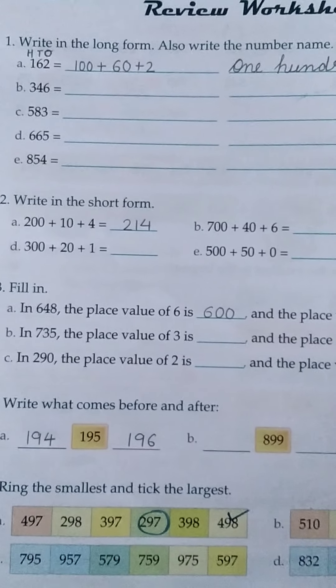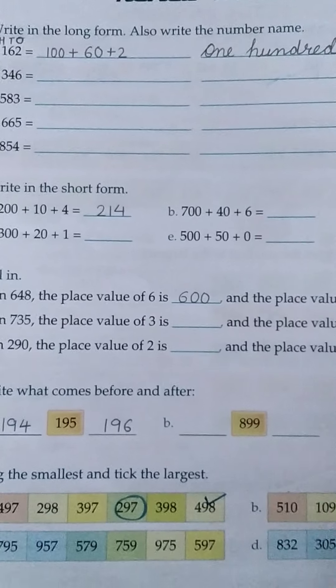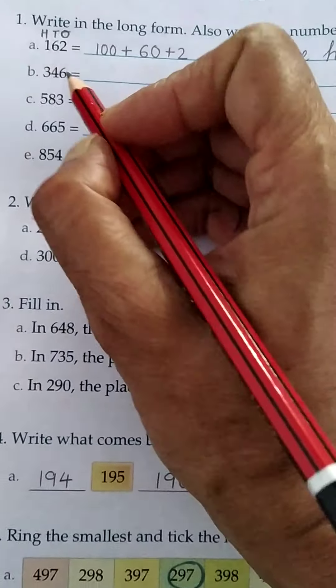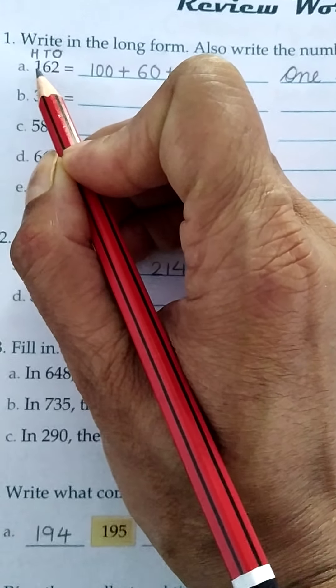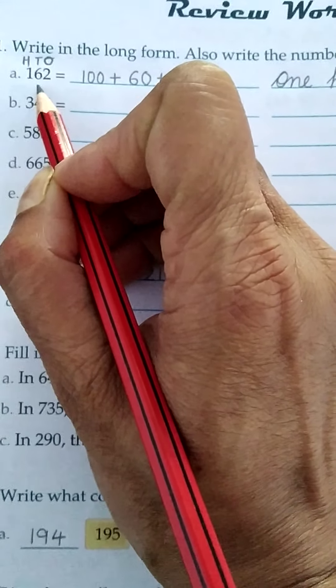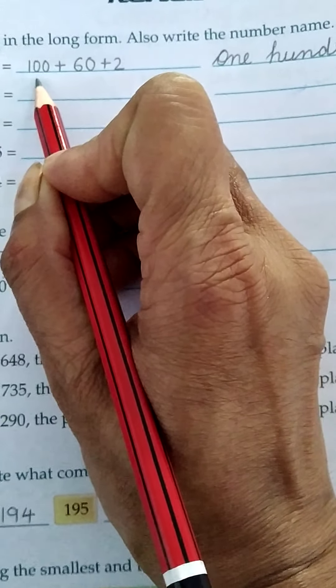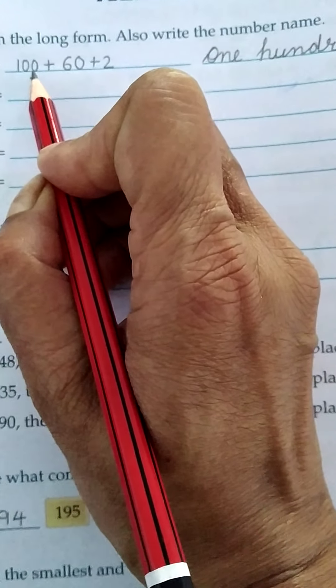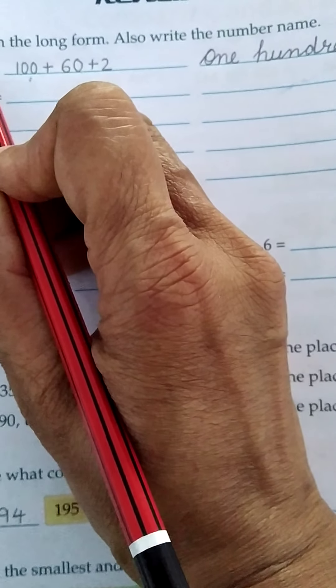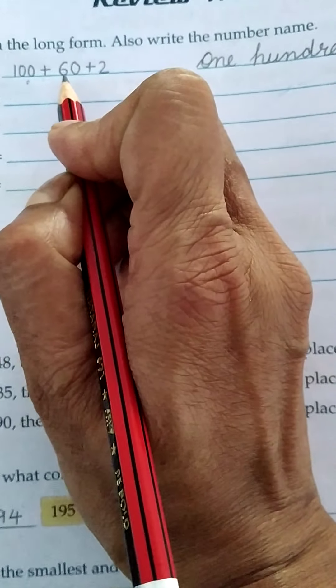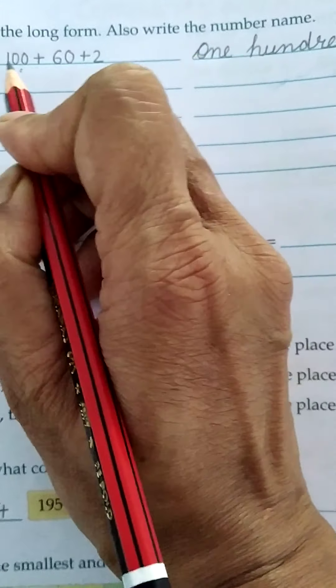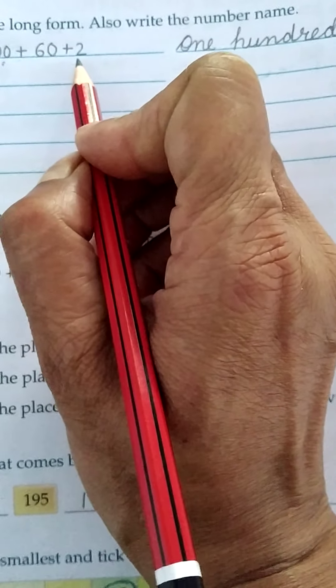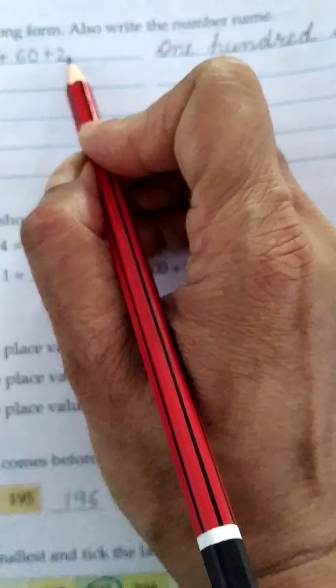Number 1. Write in the long form also write the number name. You know very well how we write the long form. First you write the ones, tens and hundreds for your help. Then you write the number 162. One is on the hundreds place so we write 100. On the tens place there is 6, so plus 60. Plus on the ones place 2. So our number is 100 plus 60 plus 2. This is the long form. It means 162.